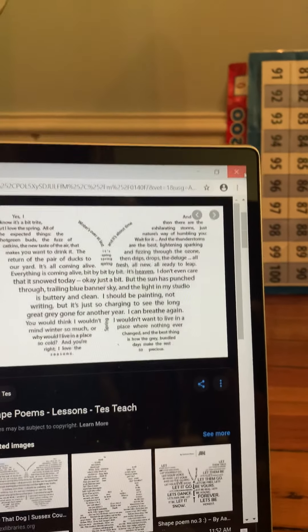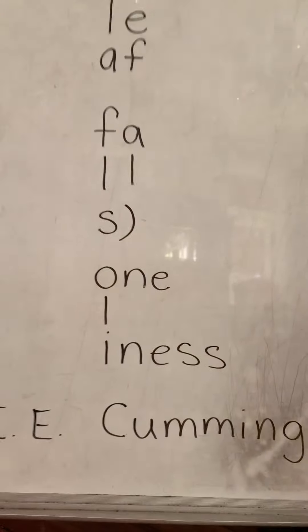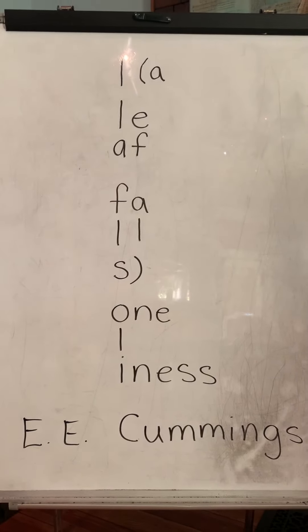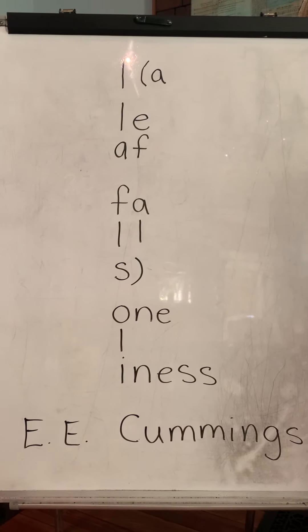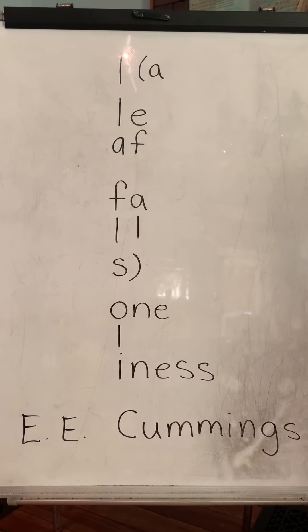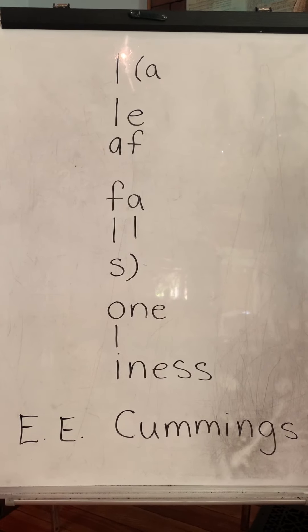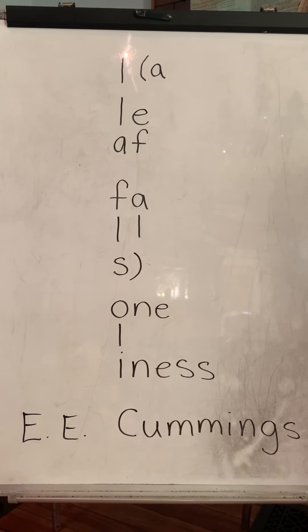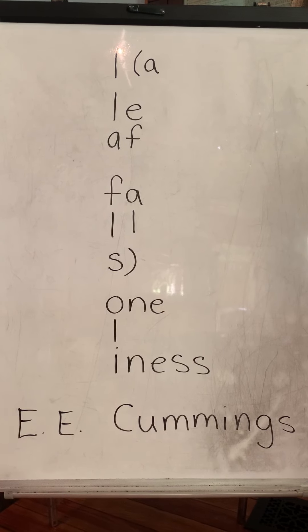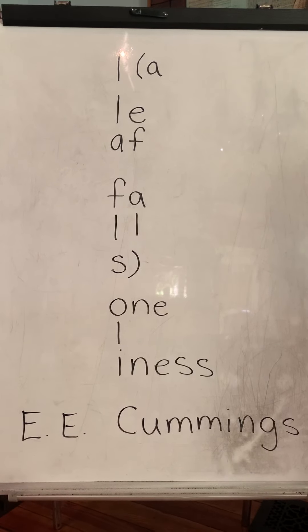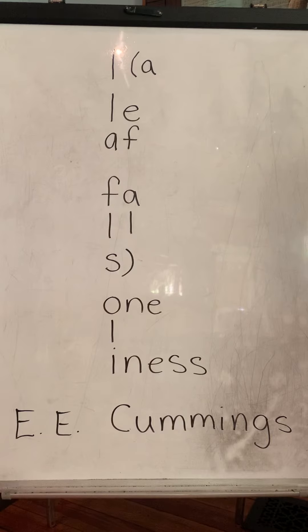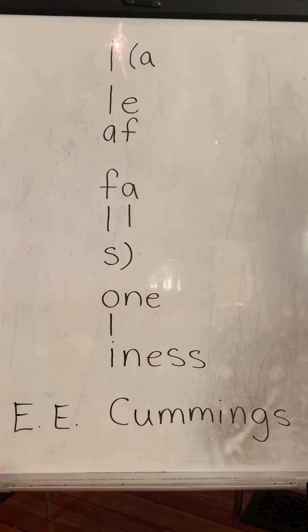So what I want you to do is get inspired by E.E. Cummings and create your own concrete poem. Whatever shape you want, and then you can use similes, adjectives, and all of your ideas for writing to create an amazing poem in that shape. I can't wait to see what you do. Bye!